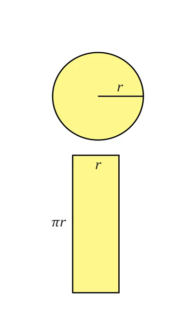The circle's area is equal to the rectangle's area, which is r times pi r, and that equals pi r squared. Thus, the circle's area is pi r squared.